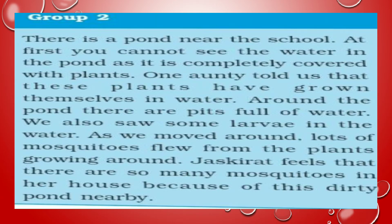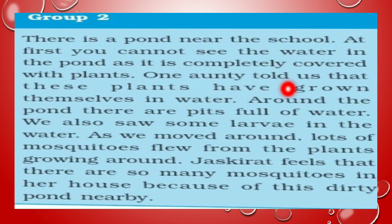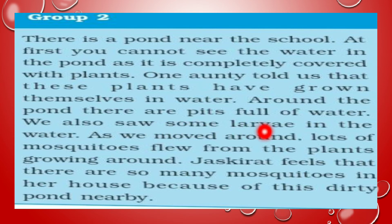Group 2: there is a pond near the school — school के पास एक तालाब है. At first you cannot see the water in the pond as it is completely covered with plants. पहले उस पानी को हम नहीं देख पाए क्योंकि वो पौधों से पूरी तरह ढका हुआ था. One auntie told us that these plants have grown themselves in water. Around the pond there are pits full of water — pond के चारों ओर गढ्ढे थे जो पानी से भरे हुए थे. We also saw some larva in the water. As we moved around, lots of mosquitoes flew from the plants. Jaskiarat feels that there are so many mosquitoes in her house because of this dirty pond nearby.